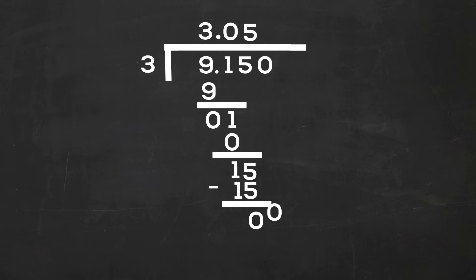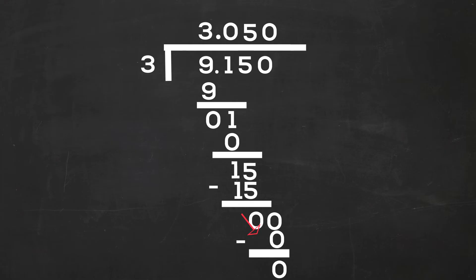Let's bring down this final 0. 3 goes into 0 zero times. 0 times 3 is 0. So 9.150 divided by 3 is 3.050.